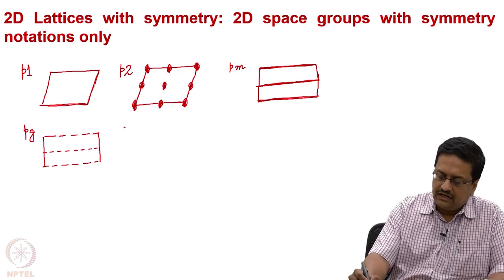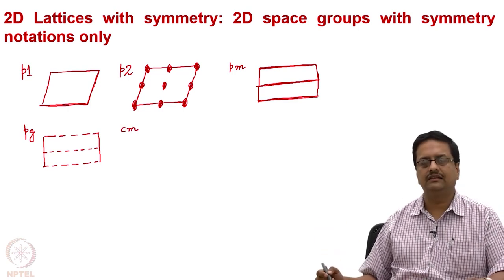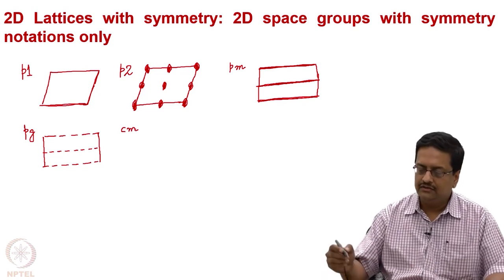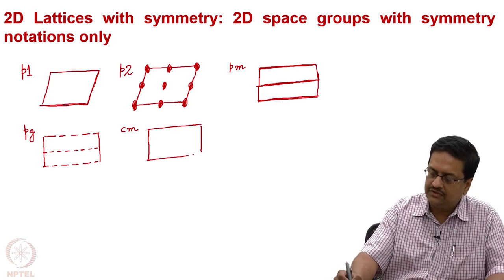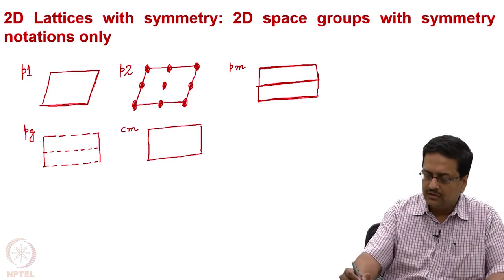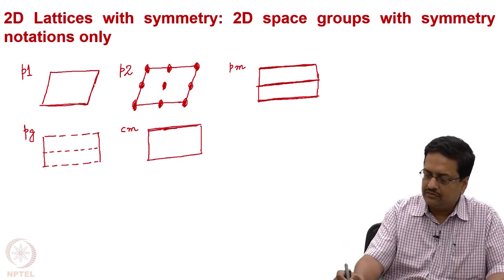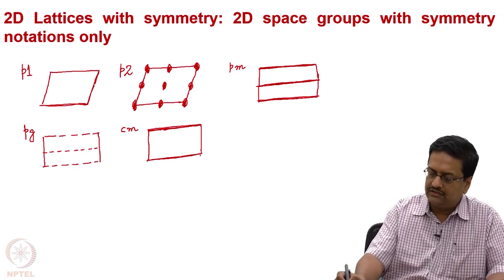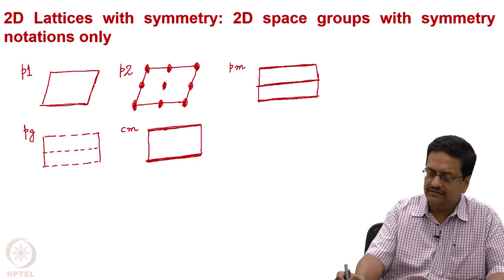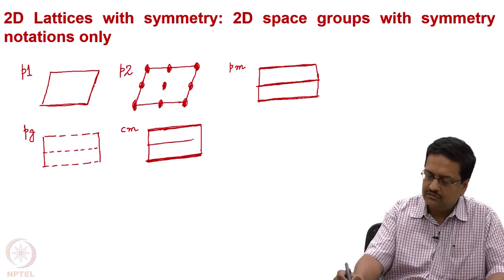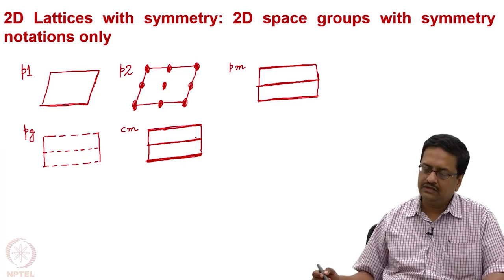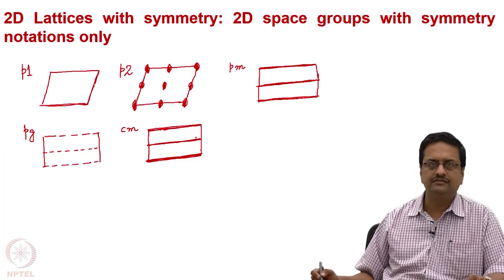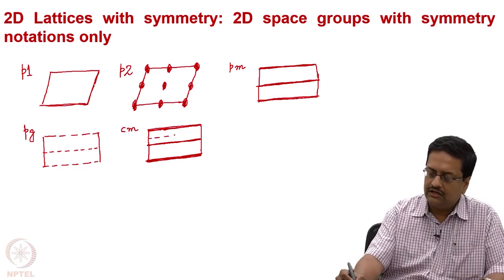As we had done earlier with Cm, where we have a centered lattice, this means the lattice has one lattice point at the center of the unit cell. The mirror is located at the edge on 2 sides and also in the middle, since you have a lattice point in the middle of this unit cell. The presence of these 2 parallel mirrors would give rise to a glide in between.